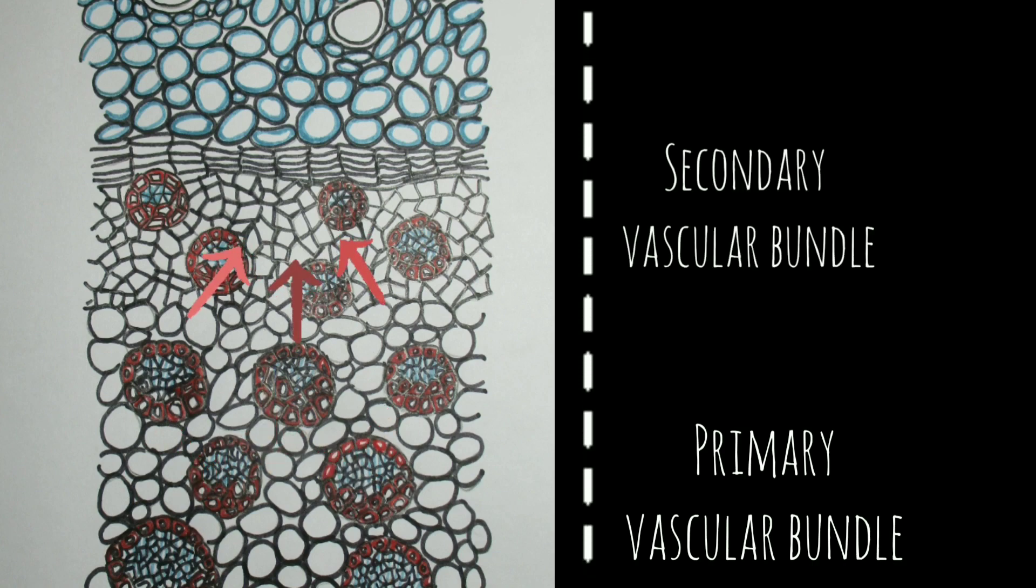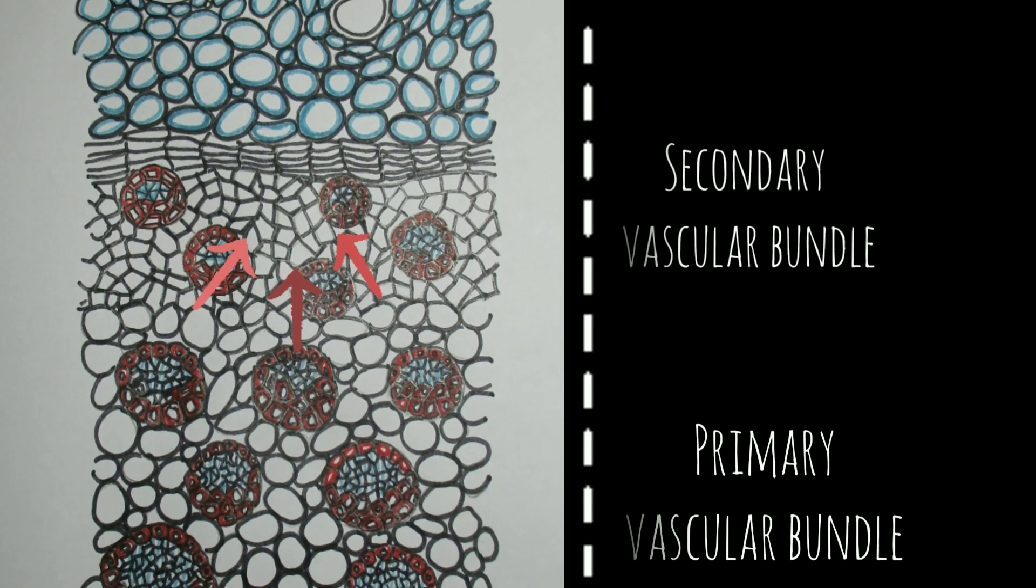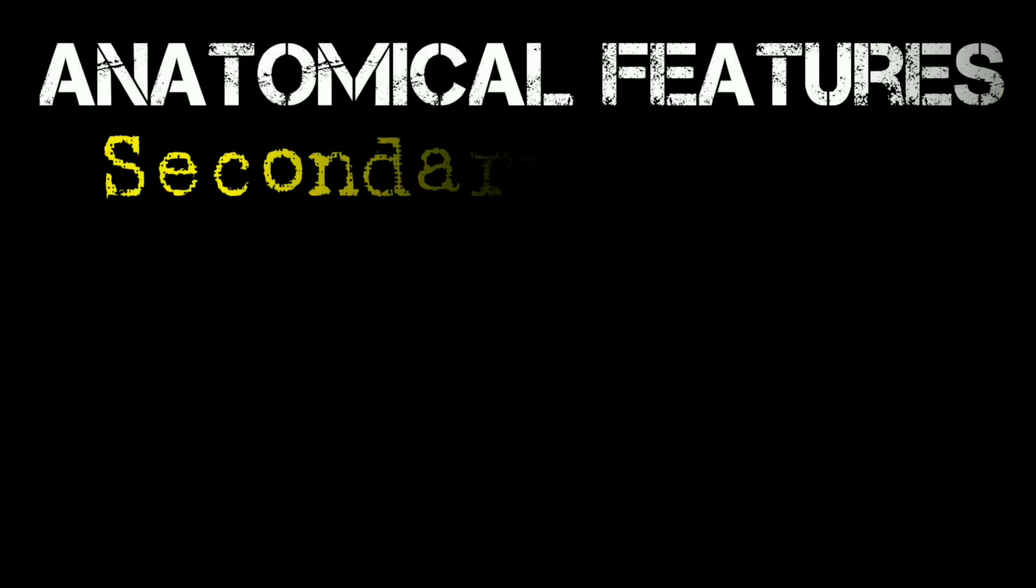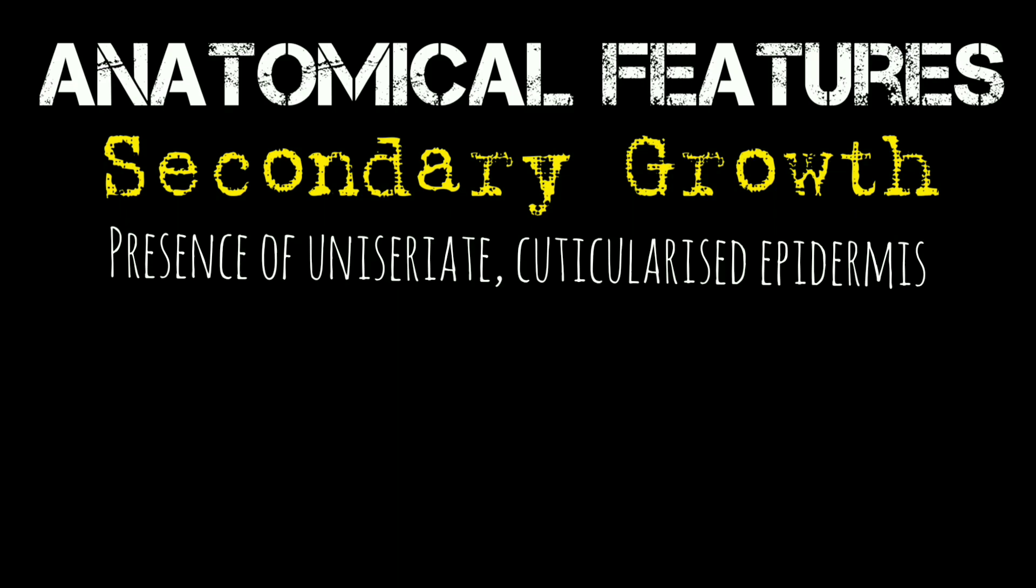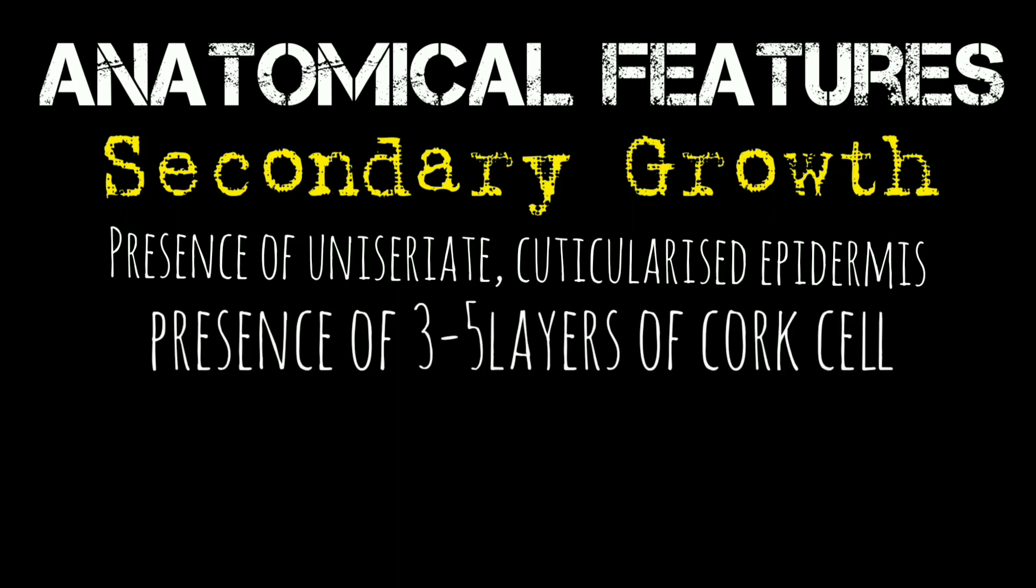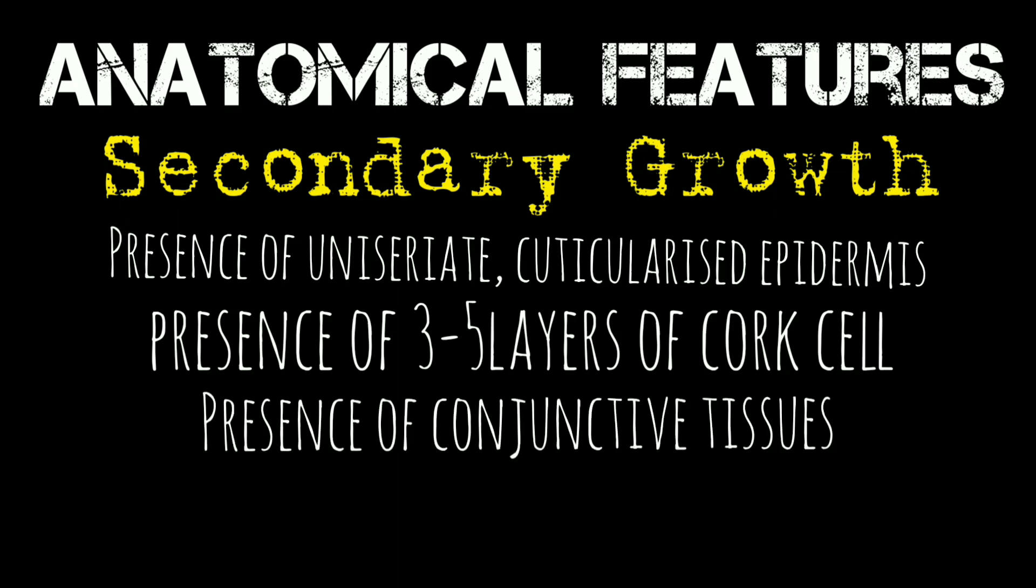So we could comment on the anatomical features of this monocotyledonous stem section, that this specimen shows secondary growth with the reasons being: presence of uniseriate cuticularized epidermis with presence of three to five layers of cork cells, presence of conjunctive tissues with secondary vascular bundles, and the primary vascular bundles are scattered and the vascular bundles are collateral and closed type.